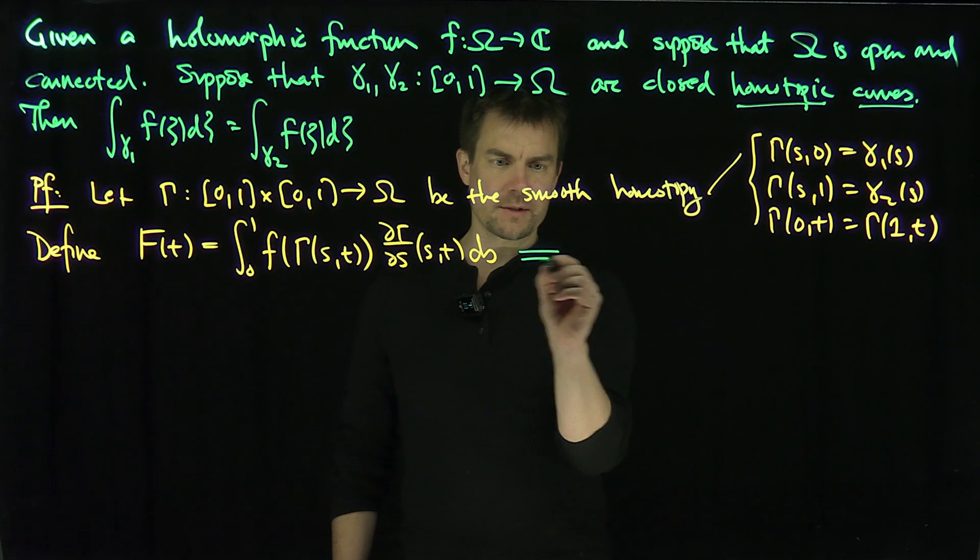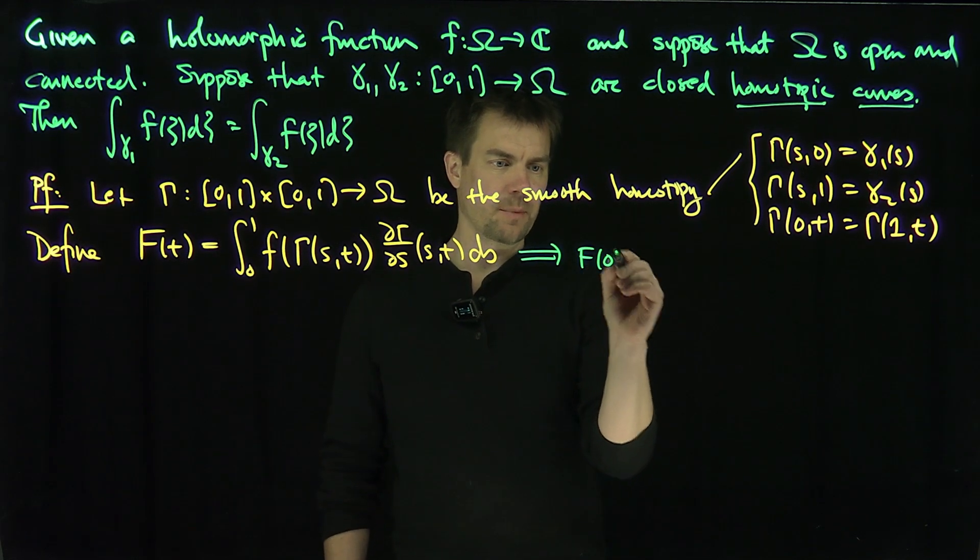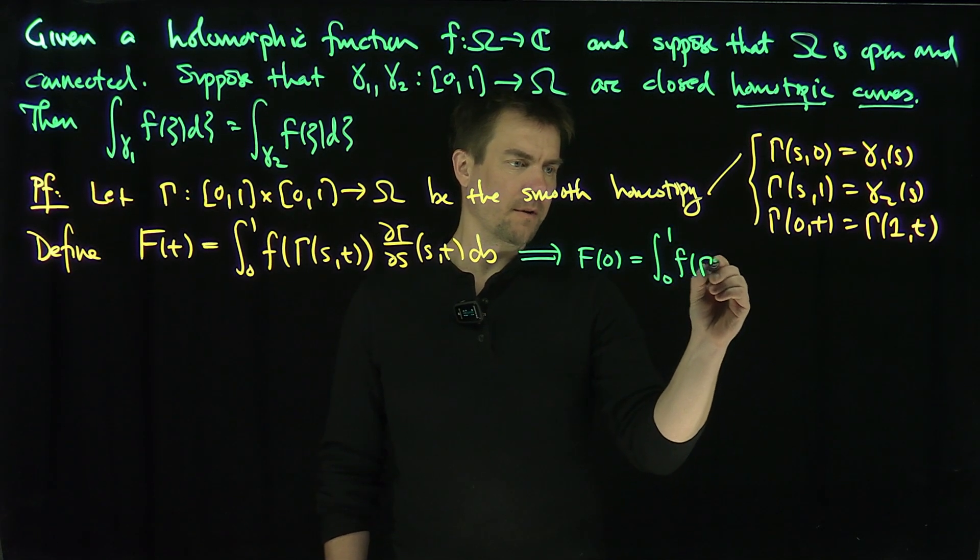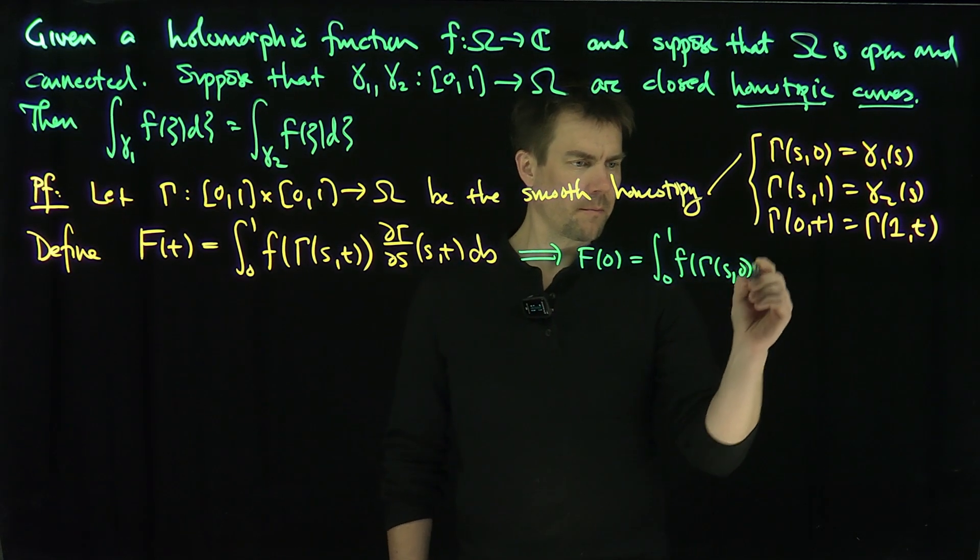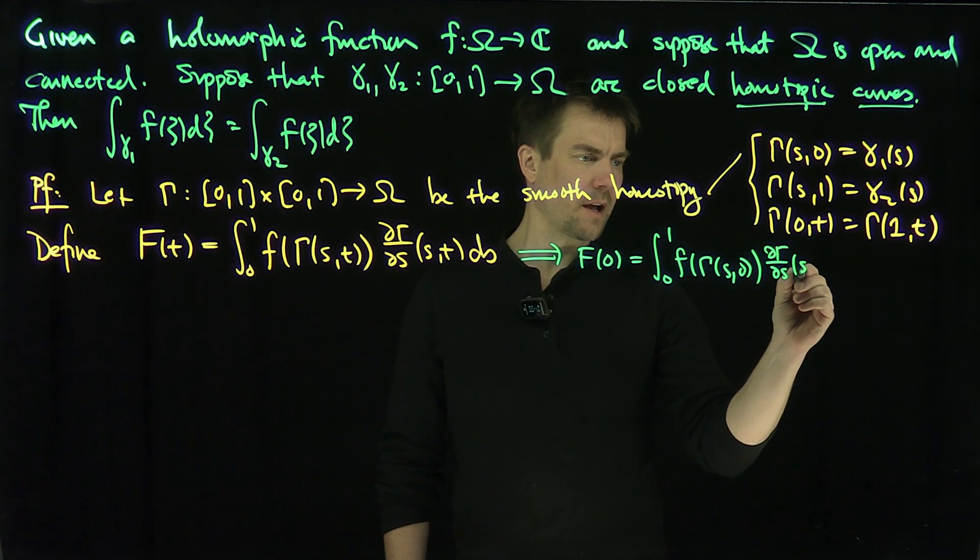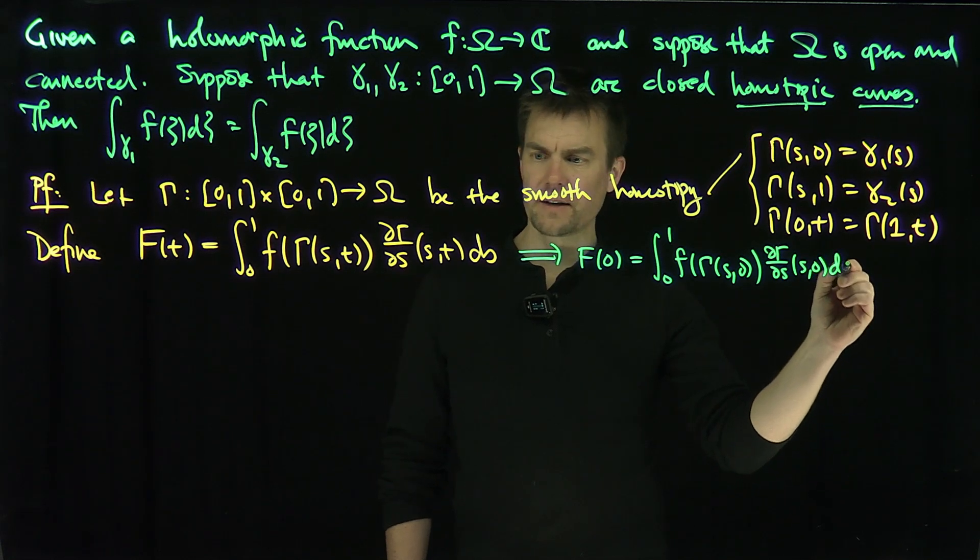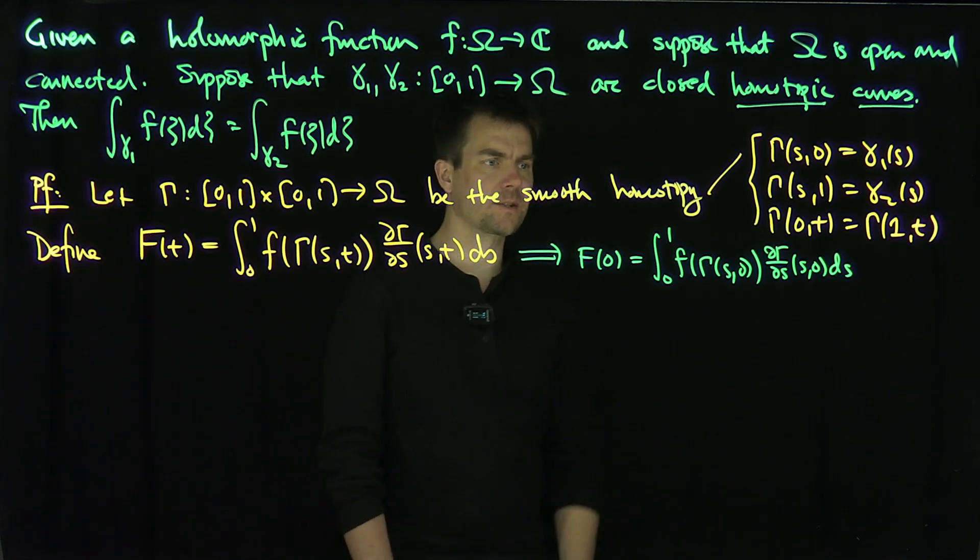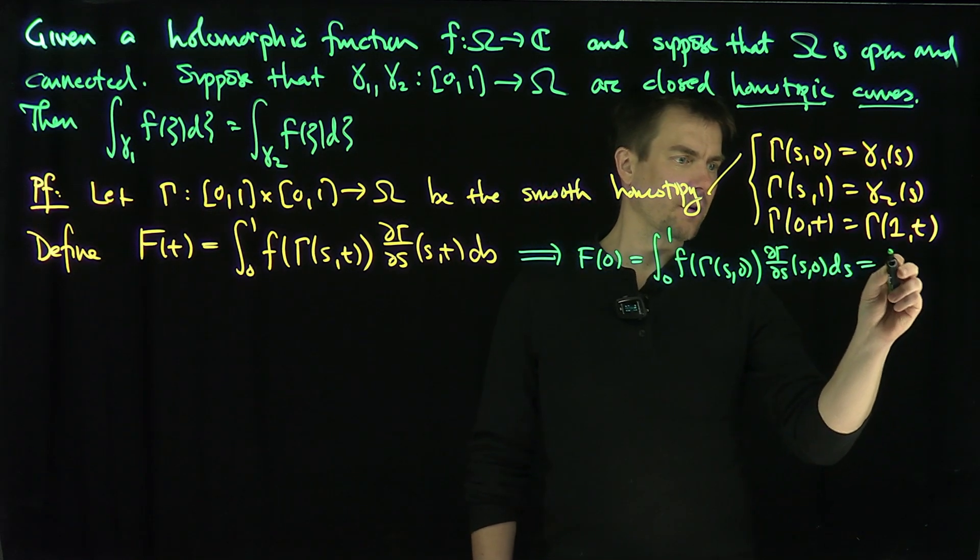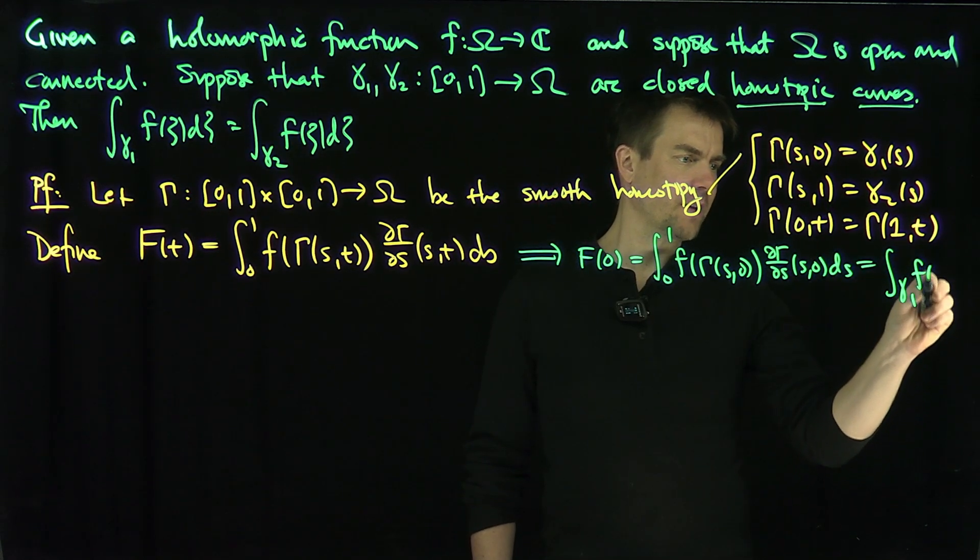Well, let's look at what F of 0 implies. F of 0 is going to be the integral from 0 to 1 of F of gamma (S,0), and then d gamma dS (S,0) dS. Now what is this? Well, gamma of (S,0) is my gamma1. So this is exactly just the integral over gamma1 of F of zeta d zeta.